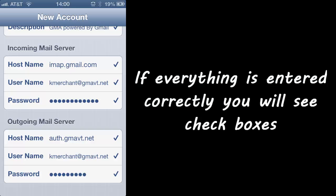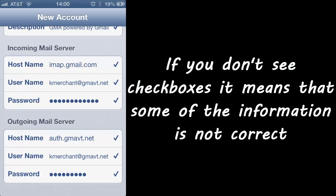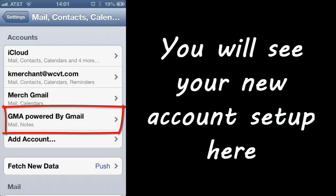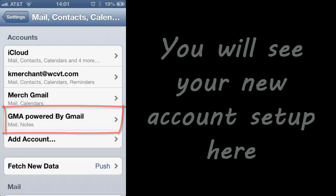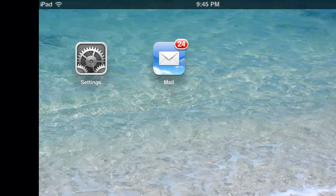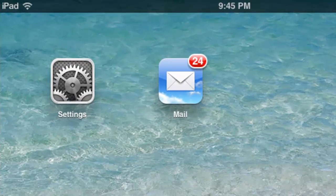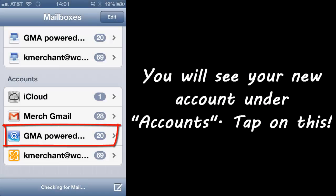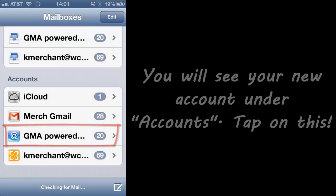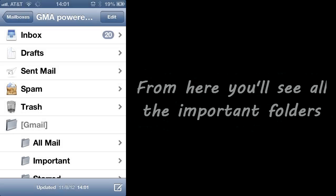If everything is entered correctly, you'll see check boxes — that's a really good thing. If you don't see check boxes, it means that some of the information is not correct, and you may have to retype it in, which is easy to do on these smartphones. You'll see your new account set up here. I can tap on the mail icon, I'll see the new email set up under accounts, I'll tap on this, I'll see my inbox, and from here on you'll see all the important folders that you need.